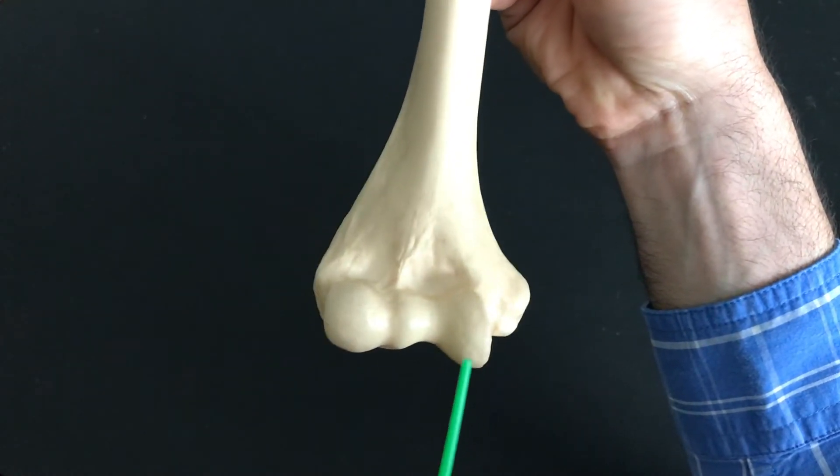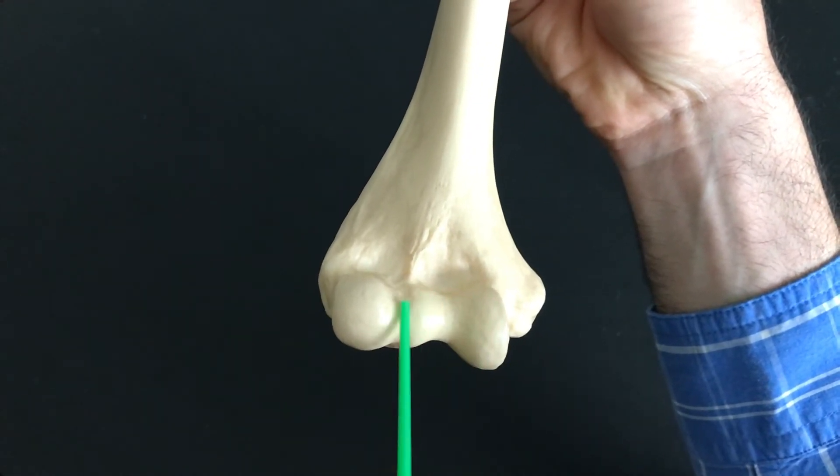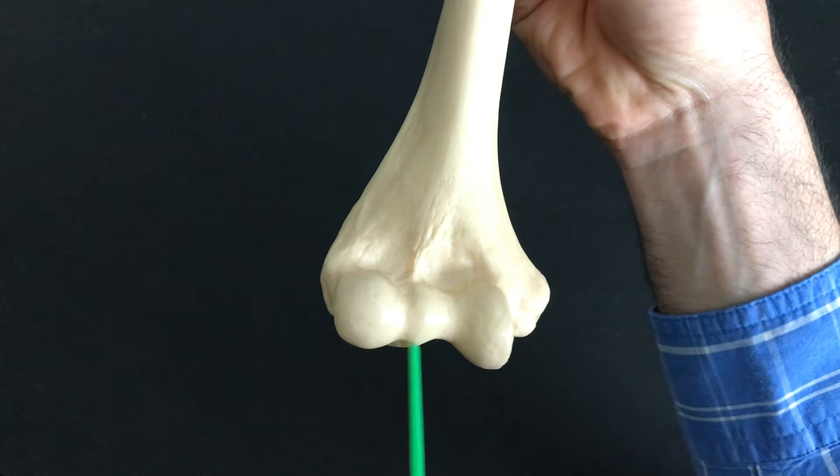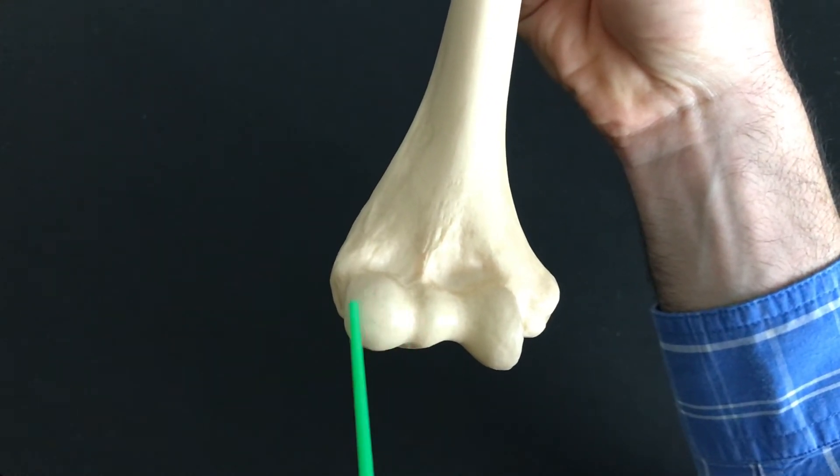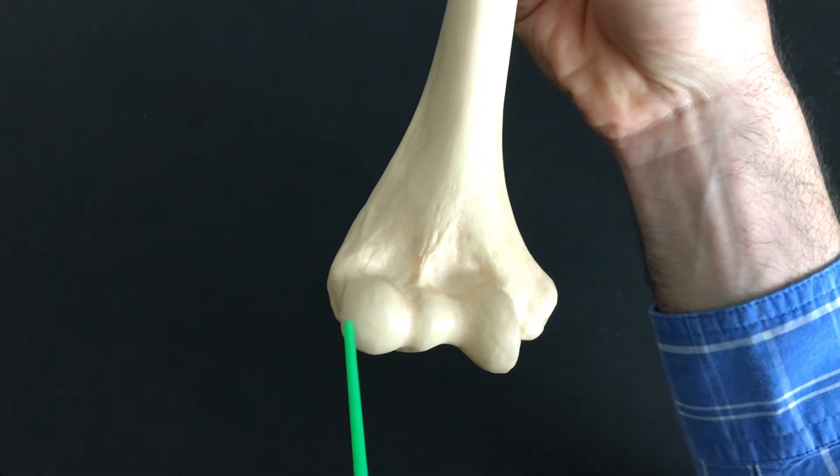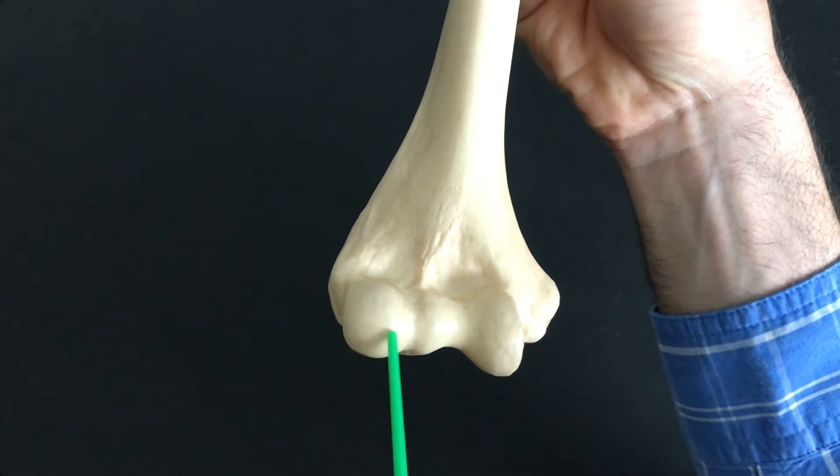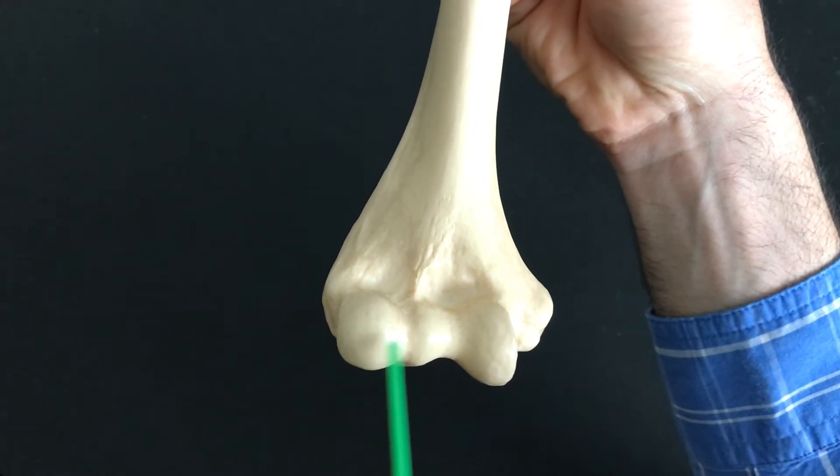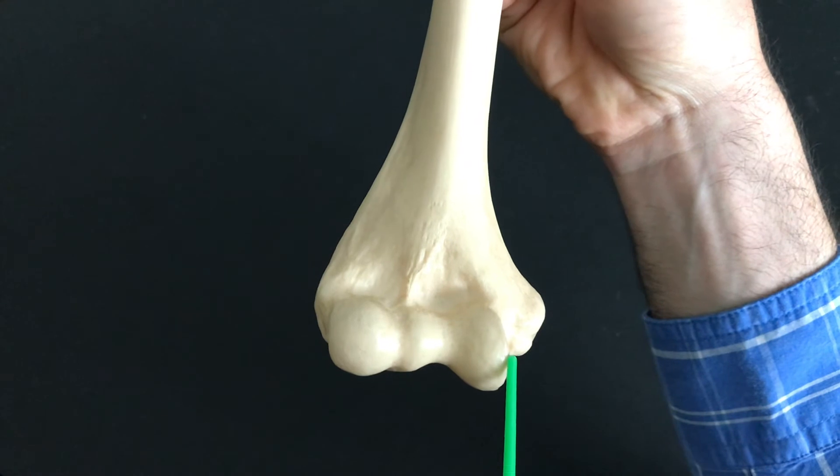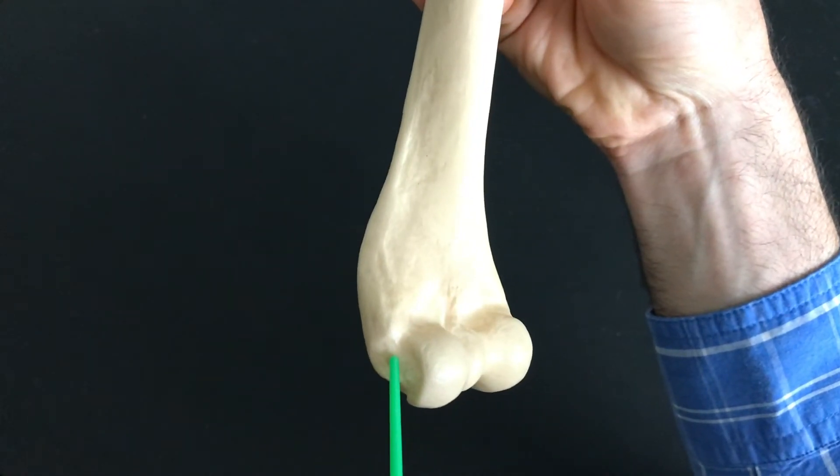If we look at the condyles themselves, we have this smooth structure right here—this is called the trochlea—and we also have this second smooth structure right here we call the capitulum. So the trochlea and the capitulum: the capitulum sits laterally, the trochlea sits medially. Here's your medial epicondyle, here's your lateral epicondyle.